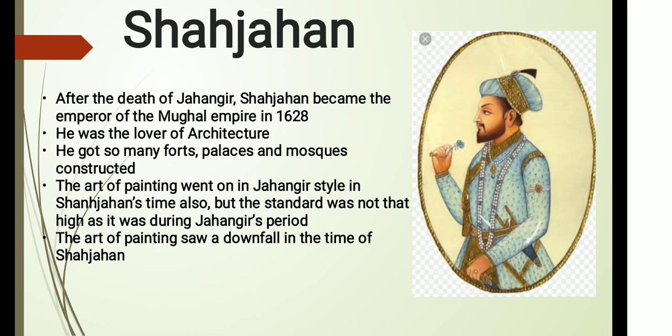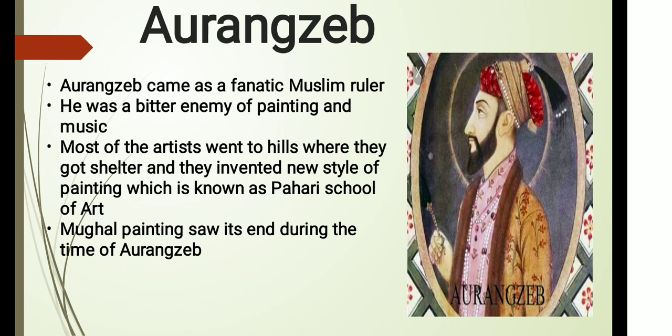Aurangzeb was the sixth emperor of the Mughal Empire. He came as a fanatic Muslim ruler and was a bitter enemy of painting and music. Most of the artists went to the hills where they got shelter, and after reaching there, they invented a rare new style of painting known as the Pahari School of Art. In this way, Mughal painting saw its end during the time of Aurangzeb.